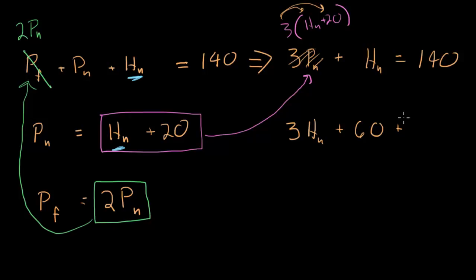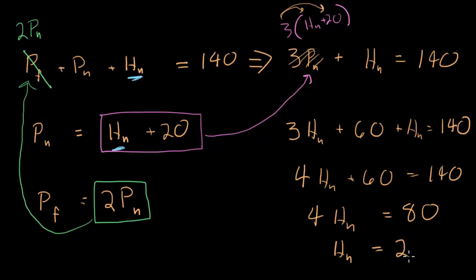That takes care of my first term, and I've still got my H_n here, so plus H_n equals 140. I can combine these guys: 3H_n plus another H_n is 4H_n plus 60 equals 140. Now I can take my 60 away from both sides to get 4H_n equals 80. All I have to do is divide both sides by 4 to get H_n equals 20.